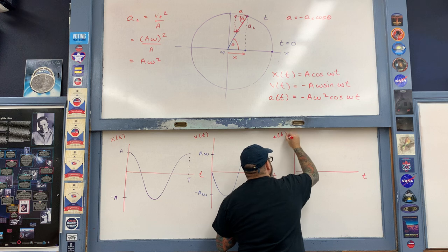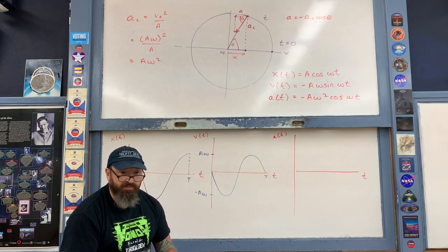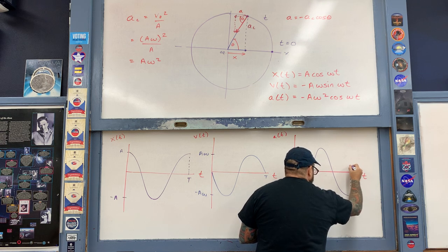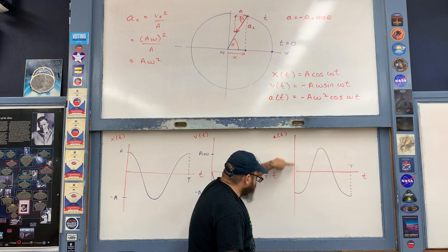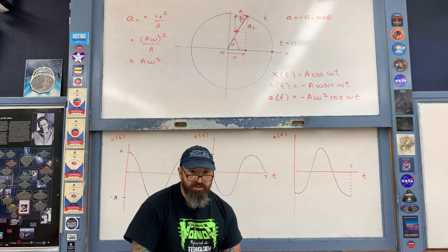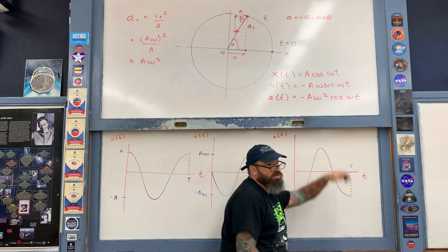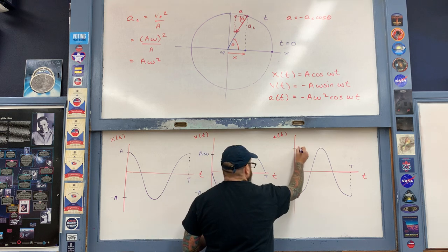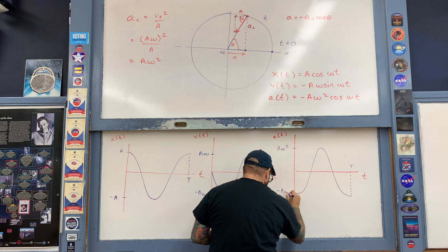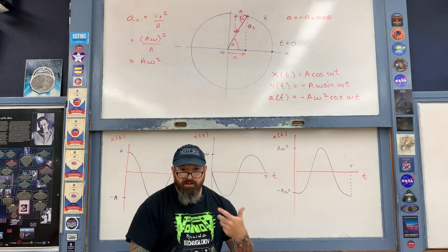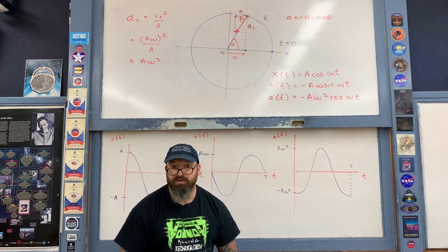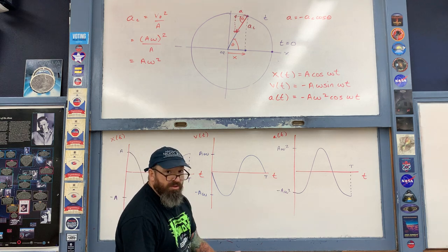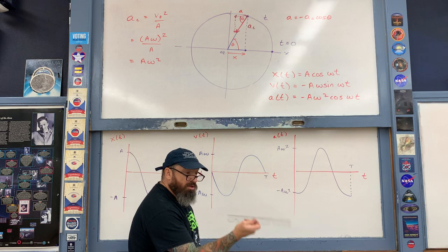Graphing acceleration as a function of time gives a negative cosine curve. This represents one full oscillation with period T. The maximum accelerations are ±Aω², occurring at the amplitude positions — where the spring force is greatest — positive here and negative here. We can now relate all three graphs together through derivatives.